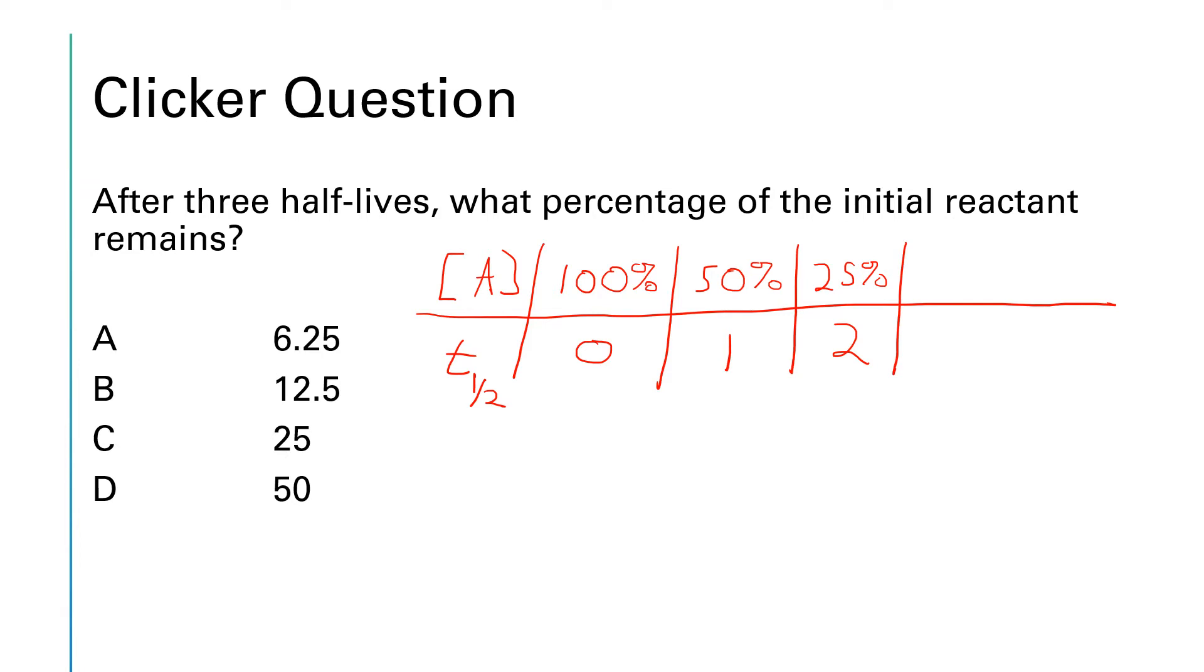After another half-life has gone by, then that 25% will be cut down to 12 and a half percent. And if another half-life goes by, we'll be cut down to six and a quarter percent. And we could continue drawing this table on for as many half-lives as you wanted to go. But our particular problem is asking us about three half-lives. So we're looking right here. After three half-lives have passed, 12 and a half percent of our original amount remains.